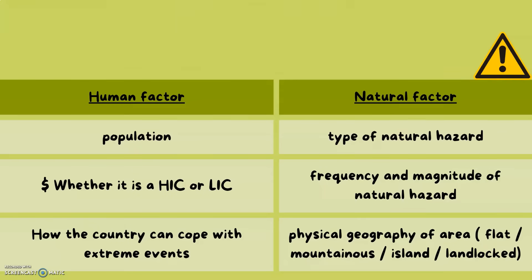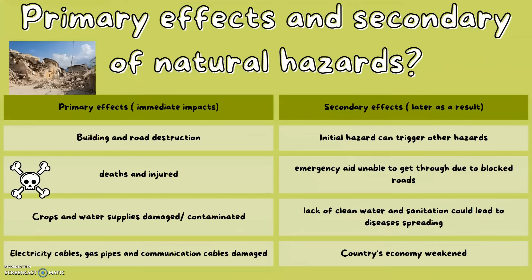Now let's look at the primary and secondary effects of natural hazards. A primary effect is the immediate impact, whereas a secondary effect is what happens later as a result of the primary effects. Primary effects include building and road destruction, deaths and injuries, and crop and water supplies being damaged or contaminated, as well as electricity cables, gas pipes, and communication networks being damaged. Secondary effects include initial hazards triggering other hazards — for example, an earthquake can trigger a tsunami — emergency aid being unable to get through due to blocked roads causing more deaths, and lack of clean water and sanitation causing diseases to spread.